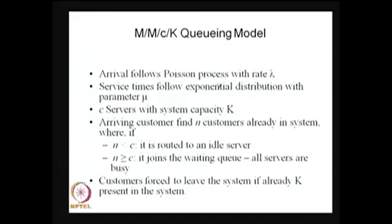The arrival follows the Poisson process, service is exponential, and we have C identical servers. The capacity is capital K. Whenever the system size is less than C, a customer will be routed to an idle server. If it is greater than or equal to C, all servers are busy and the customer has to wait.